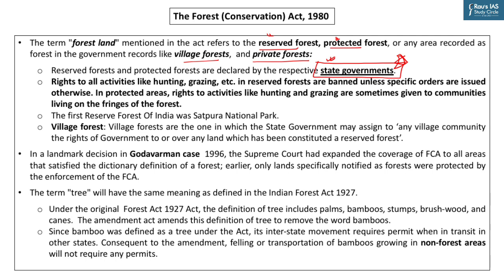Recently, you might have heard about the Karnataka High Court judgment. The Karnataka government denotified certain state forests with the intent to divert them for rehabilitation of tribals and other people. But you cannot denotify — it is illegal for the Karnataka state government to do so because they can notify but cannot denotify. So the Karnataka High Court struck down the decision of the Karnataka state government.